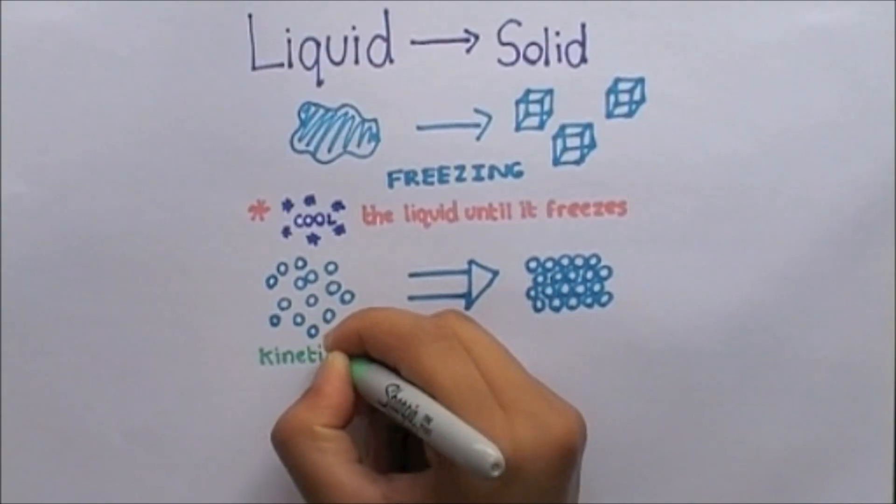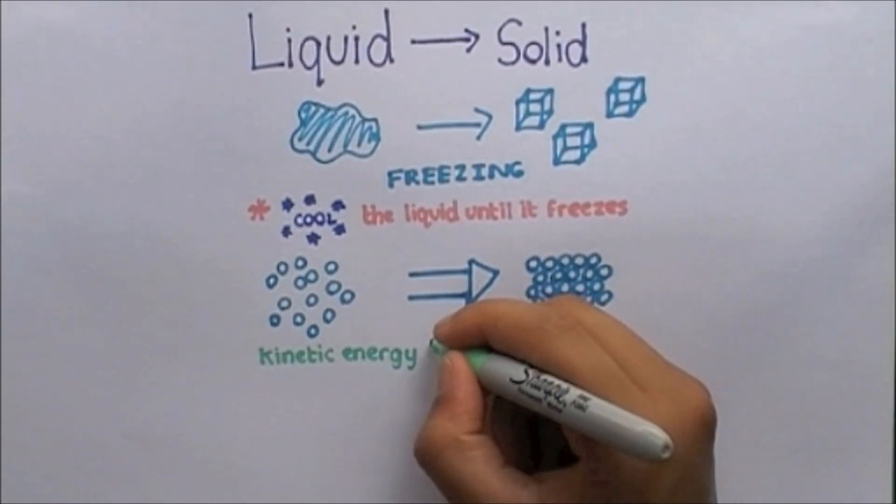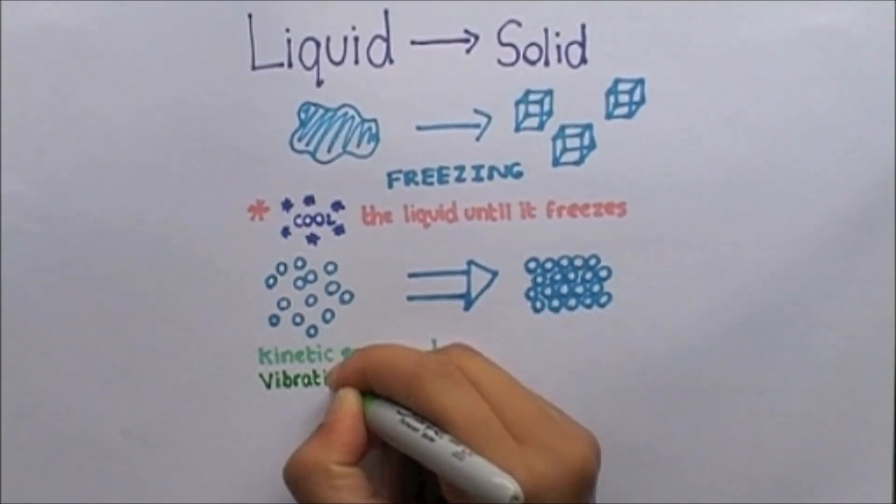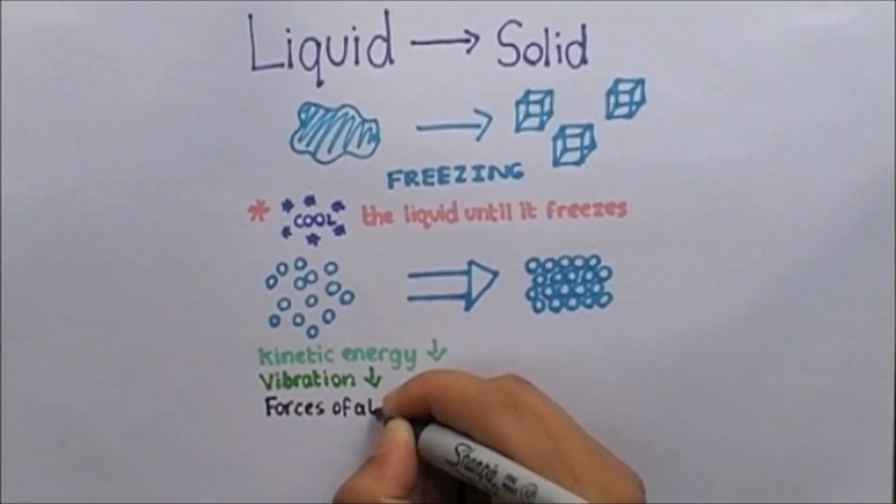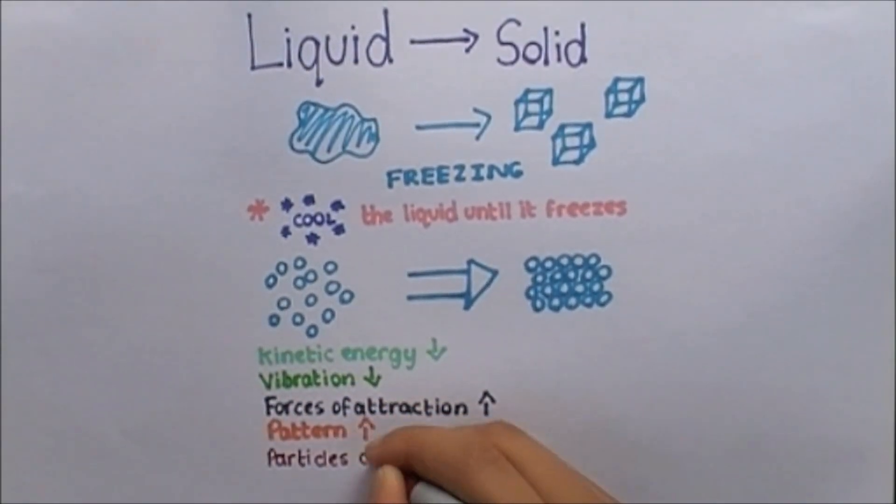When a liquid changes into a solid, the particles lose kinetic energy and vibrate less. The forces of attraction strengthen and a fixed regular pattern is formed. The particles are no longer able to slide past each other, creating a solid state.